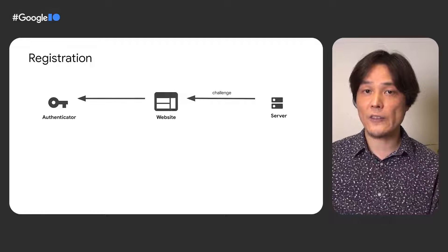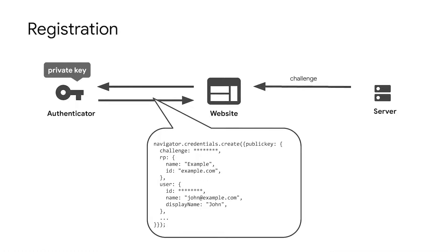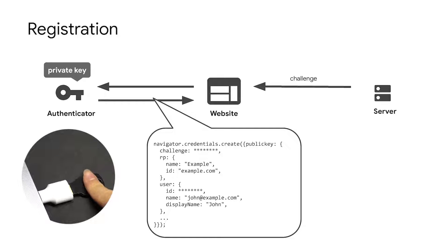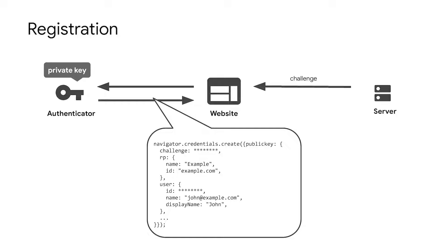To register the user's authenticator, the website first obtains a challenge from the server, which prevents replay attacks. When the website calls navigator.credentials.create(), the WebAuthn dialog is displayed in the browser and the authenticator prompts the user to perform the ceremony. This important step makes sure this authentication involves a physical gesture by a human. The authenticator generates a unique public key pair for the user to prove the user's possession of the device. This generated key pair is only useful for the registered origin. This means even if a user is trapped on a phishing website, the credential won't be available. This is FIDO's unique characteristic which protects users from phishing attacks.